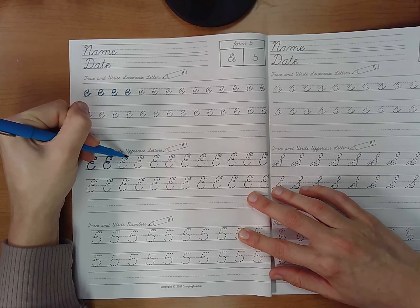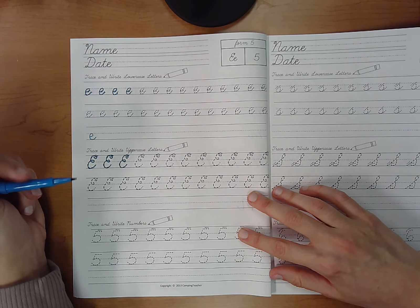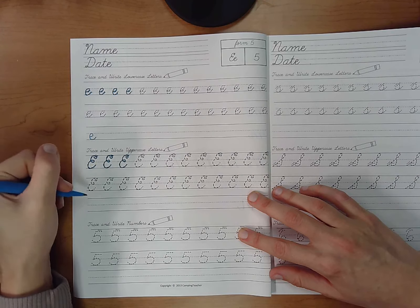Go down, up, around the loop-de-loop and up again. Then you'll do all of your tracing Es.